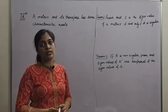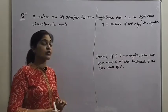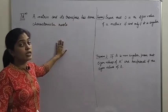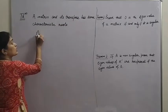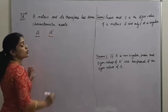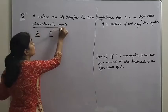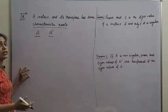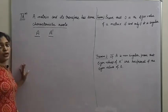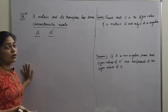Welcome students. Today we are going to discuss some theorems based on characteristic vectors and characteristic roots. The first result is: prove that a matrix and its transpose have the same characteristic roots. If you have a matrix A, then this matrix and its transpose have the same characteristic roots. The characteristic roots are nothing but roots of the characteristic polynomial, so their characteristic polynomials will be the same, and obviously their characteristic roots will be the same.